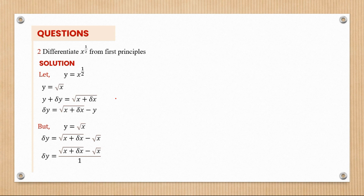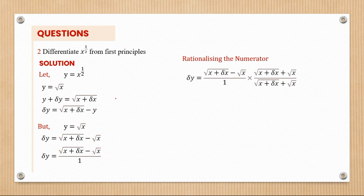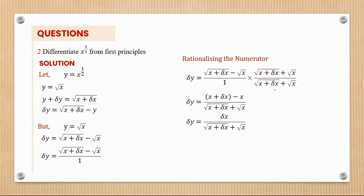We need to eliminate the root, so we rationalize the numerator. We put the expression over one to create a fraction, then multiply both the top and bottom by the conjugate — root(x plus Δx) plus root(x) — but with a plus sign. When we do that, the roots at the top disappear and we're left with (x plus Δx) minus x over root(x plus Δx) plus root(x). The x values cancel at the top, leaving Δx at the numerator. Dividing through by Δx gives Δy/Δx equal to 1 over root(x plus Δx) plus root(x).